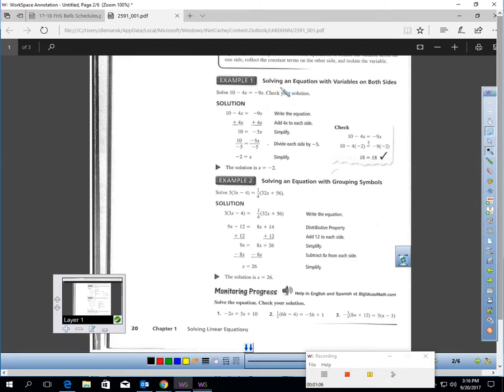We're solving an equation that has variables on each side. The first thing is try to simplify each side. 10 minus 4x, I can't simplify. They're not alike. And negative 9x, I can't simplify.